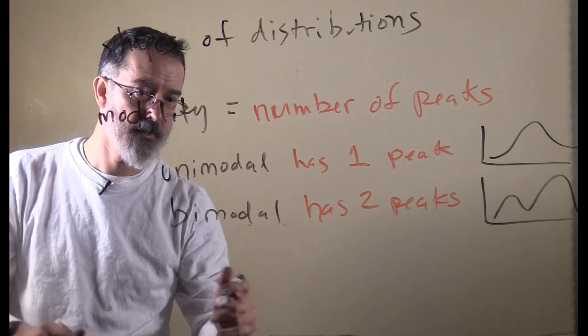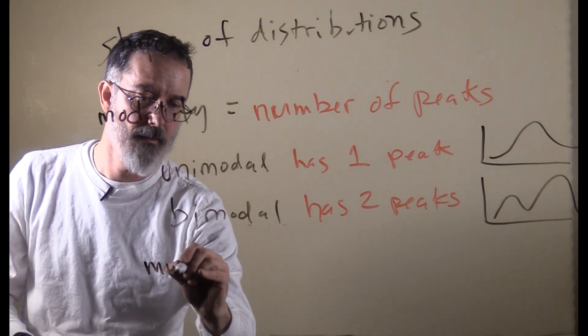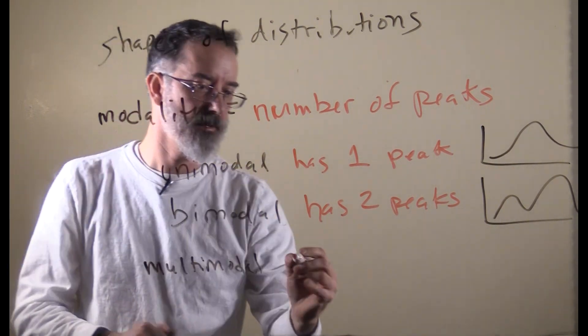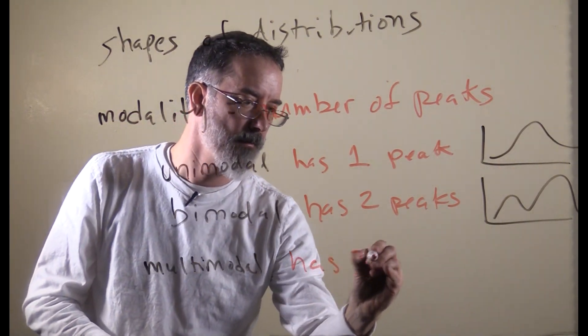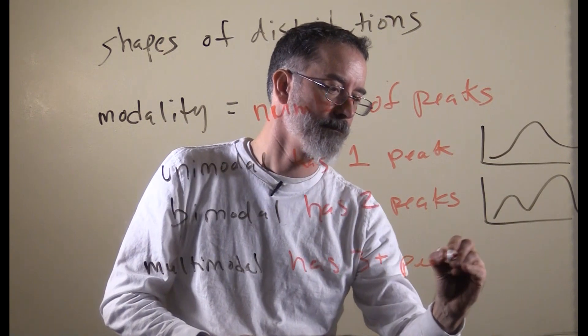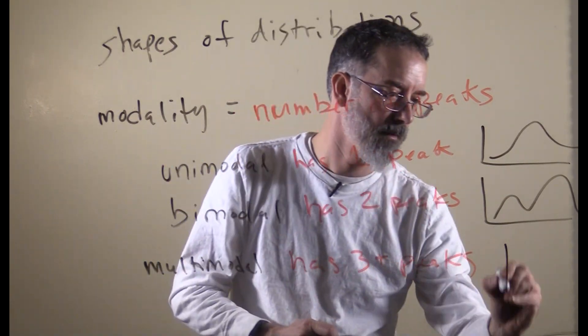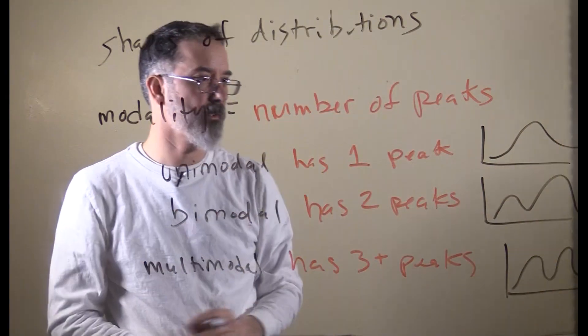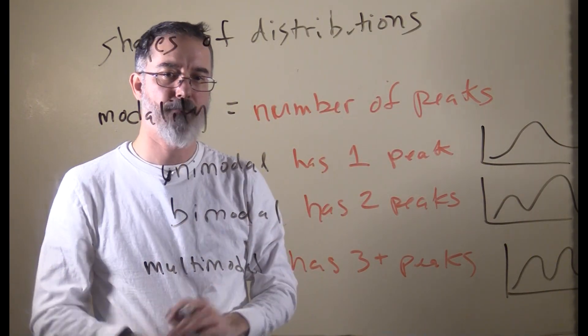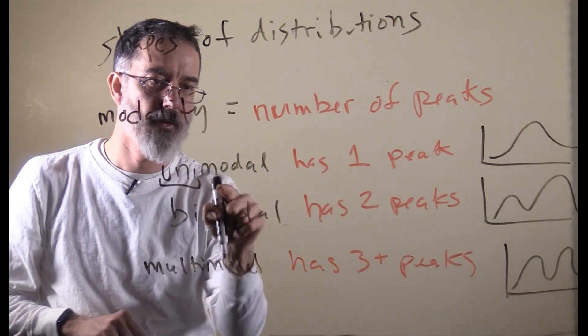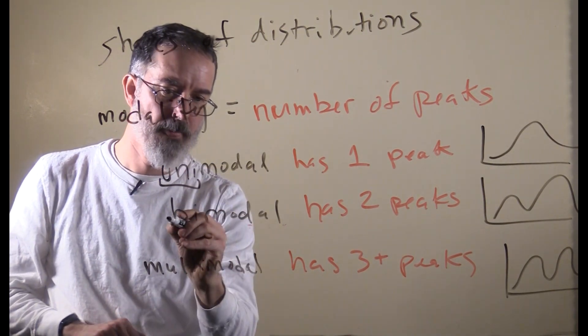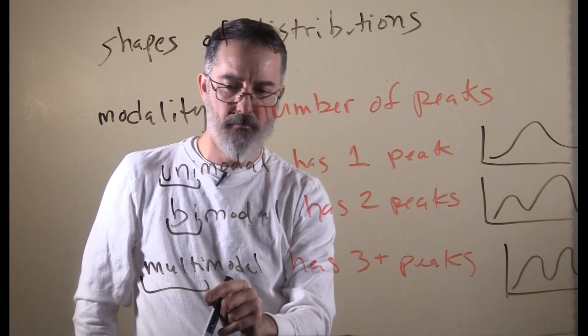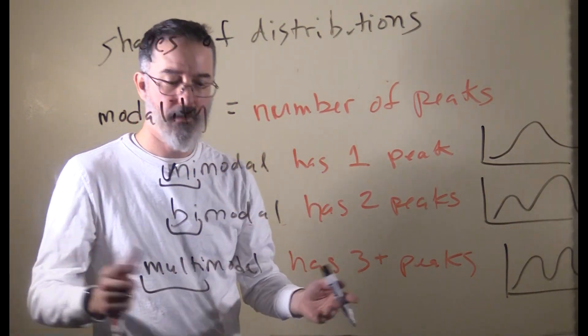Usually you do not say tri-modal after this, you usually just say multimodal, and that refers to a distribution that has three or more peaks. Una just means one peak or mode, bimodal means two modes, multi means more than one mode. That is modality.